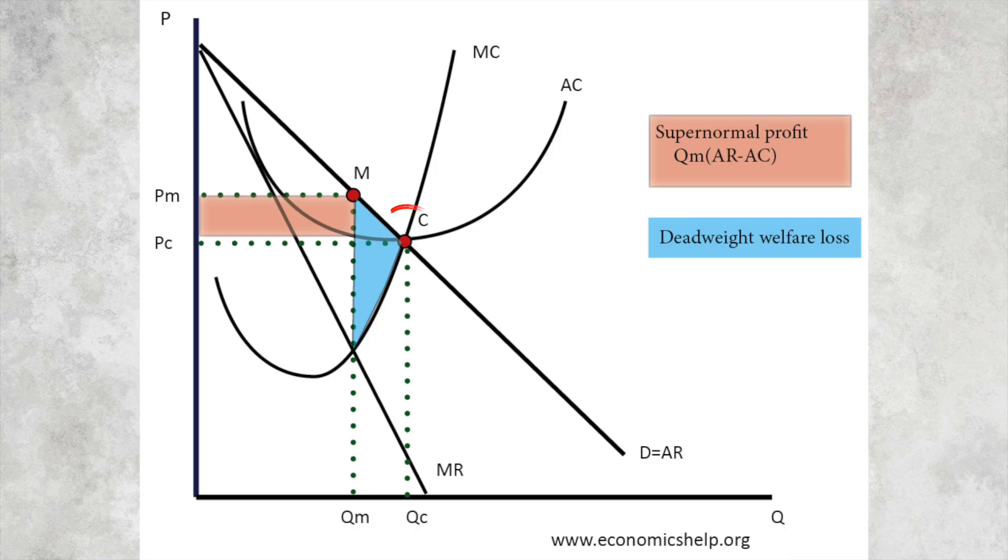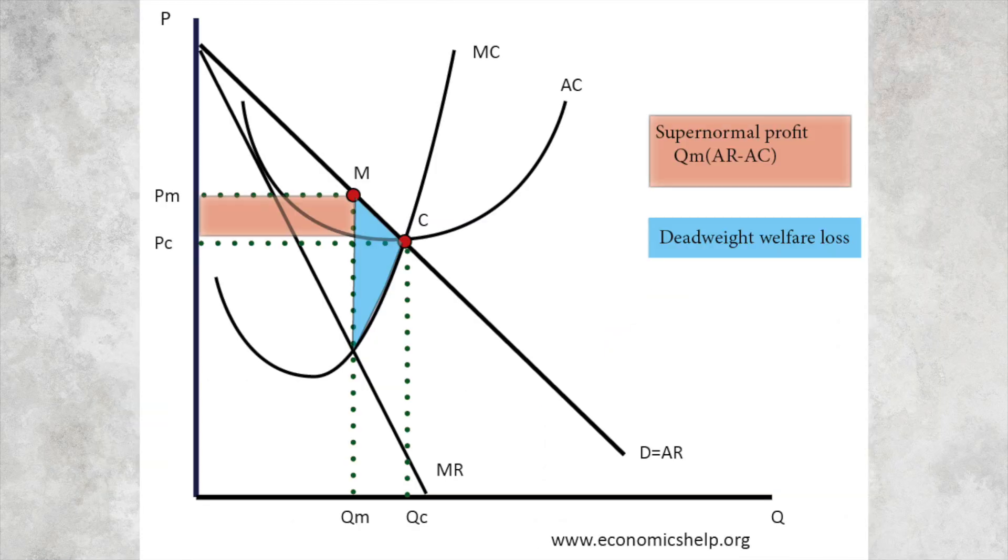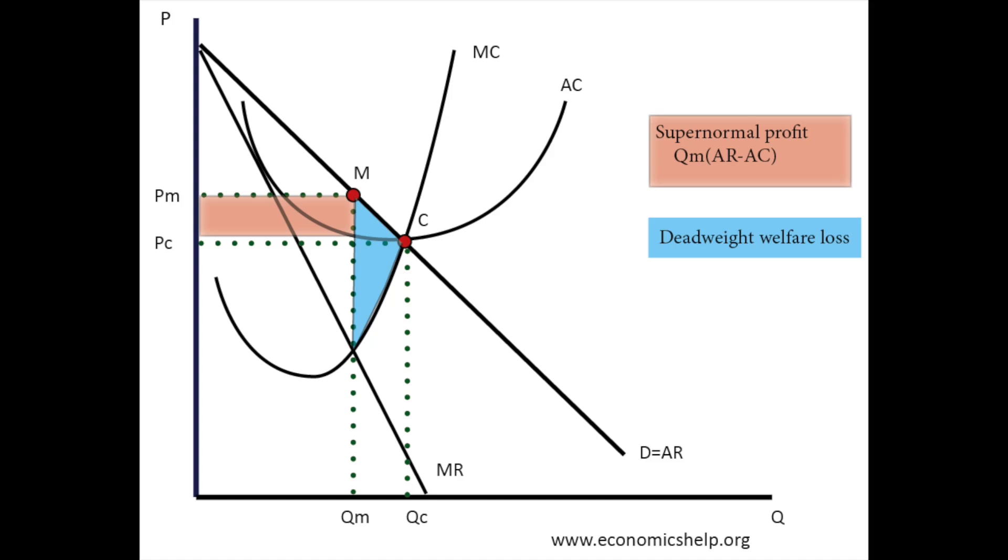Also what this diagram doesn't show is other things. For example, a monopoly may benefit from huge economies of scale, producing at the lowest point on the long run average cost curve. And this might outweigh some of these inefficiencies here. On the other hand, a monopoly may be X-inefficient with lack of competitive pressure, no incentive to cut costs over time. Another benefit potentially of a monopoly is that with large supernormal profits, it can afford to invest in research and development and develop new products. And this is going to be important for industries like pharmaceuticals where drug development is very important.